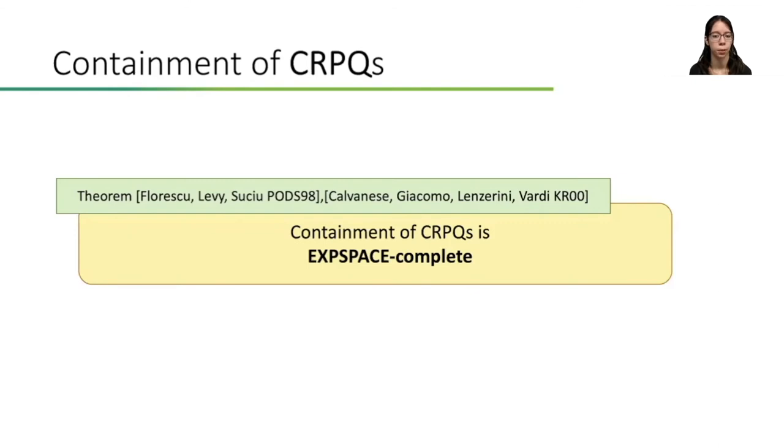So, what do we know about containment of CRPQs? Florescu, Levy and Suciu showed that it is in EXPSPACE, while Calvanese, Giacomo, Lenzerini and Vardi gave a matching EXPSPACE lower bound and extended the upper bound to two-way CRPQs. This means that the problem is decidable, yet has a high complexity. But is this the end? Not yet.